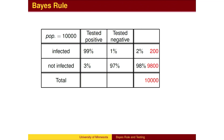Let's start calculating the numbers of individuals in each category. Of the 10,000 people, 2% or 200 are infected, and 98% or 9,800 are not infected.